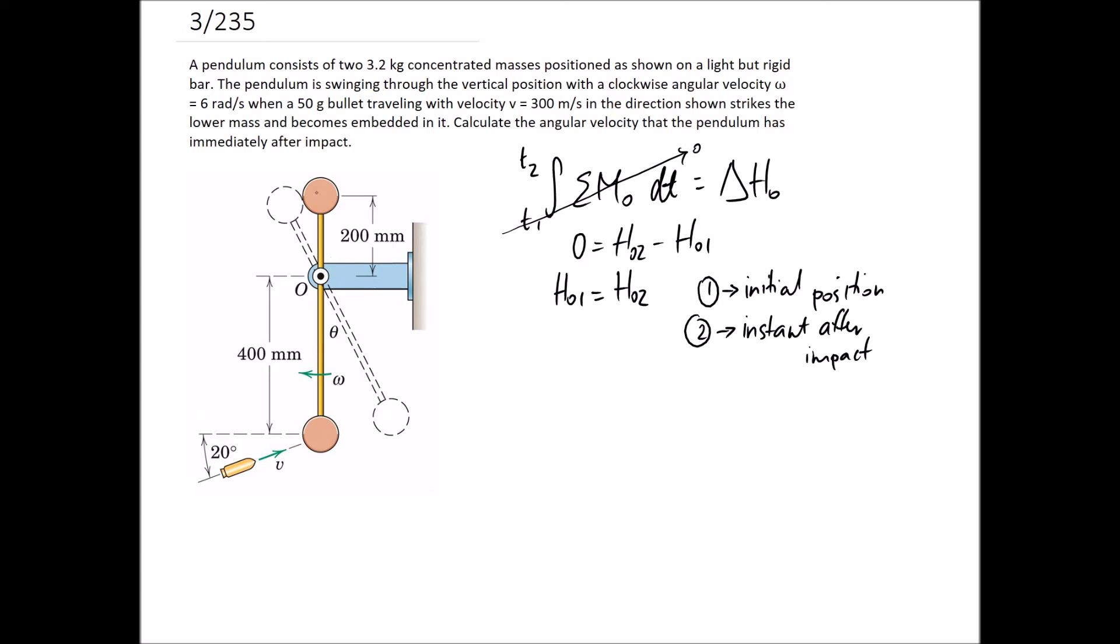To make it easier to show the calculations, I'm going to label each of my different masses. We've said that this rod here is massless essentially, so we don't need to consider it in our calculations. The only thing we need to think about is this ball, which I'm going to call A, this ball, which I'm going to call B, and the little bullet, which I'm going to call C.